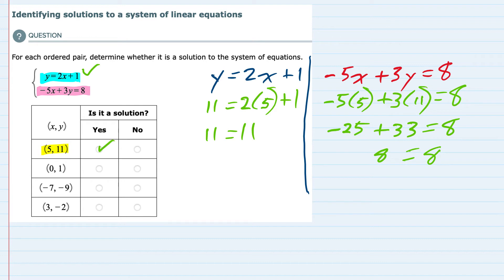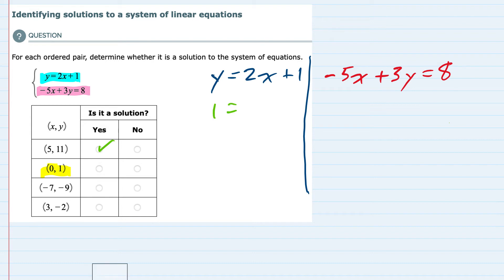And now I'll just repeat this process for the other examples. We'll move on to (0, 1). Testing that in the left hand side, the y is 1 and the x is 0. We have a 1 on the left hand side. 2 times 0 is 0 plus 1, which is just 1, so it works in the first equation.